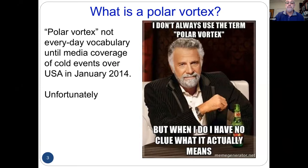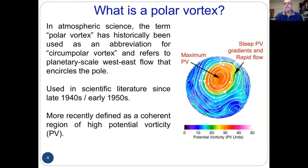So what is a polar vortex? In atmospheric science, my reading of the literature is that it historically started out as an abbreviation for any circumpolar flow — a large-scale, planetary-scale, west-to-east flow that goes around the globe. This started in the literature around the late 1940s and early 1950s, looking at winds or geopotential height.